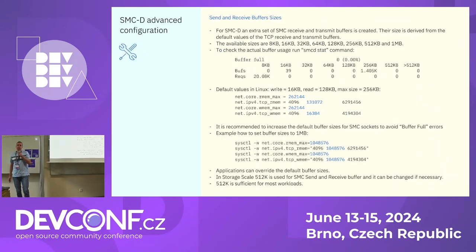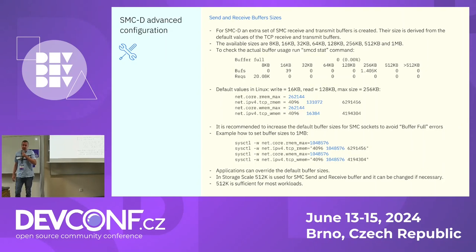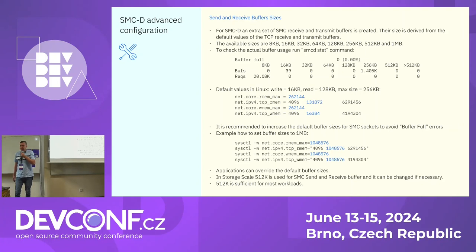To get the best performance from SMCD protocol, it is recommended to tune socket parameters in Linux. Specifically, increase the default buffer sizes, as bigger sizes are beneficial for streaming workloads and also help high-frequency request-response workloads. In Storage Scale we use 512 kilobytes as buffer size, which is sufficient for most workloads. The maximum value can be 1 megabyte. Actual buffer sizes can be checked with the SMC stat command and configured using the sysctl Linux command.